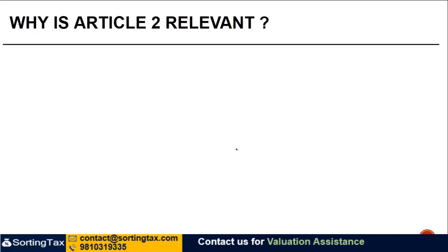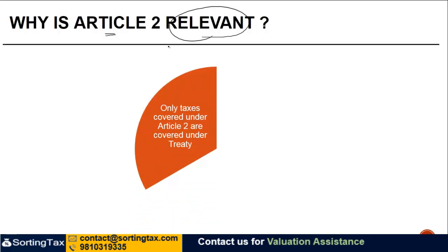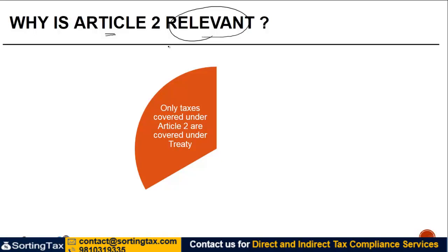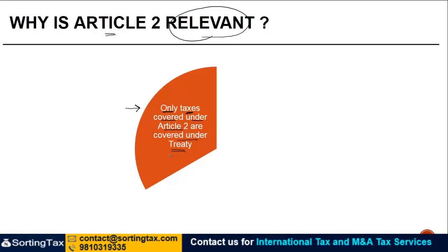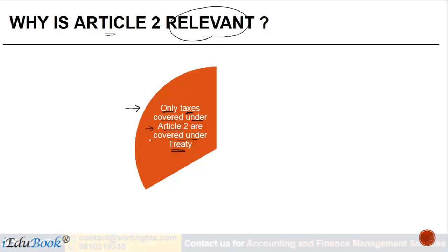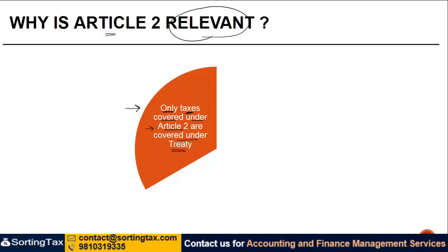So the first question is: why is Article 2 even relevant? The first reason is that only taxes covered under Article 2 are covered by the treaty. So if a person says he has been taxed in India and wants to claim a credit for the tax paid in India in the US, he is going to get a credit only for taxes paid in India that are covered by Article 2 of the India-US treaty. If the tax paid in India is not covered by Article 2, he cannot claim a credit under the India-USA double taxation avoidance agreement.